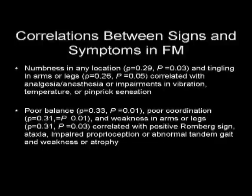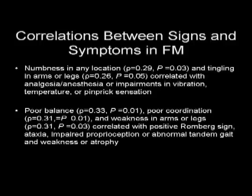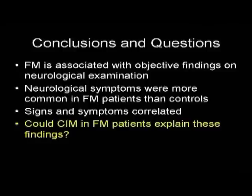We were interested in how well the symptoms and objective findings correlated. The answer was yes. The complaint of numbness in any location and tingling in the arms or legs correlated with anesthesia, analgesia, or impairments in vibratory, temperature, or pinprick sensation. Poor balance, poor coordination, and weakness in the arms and legs correlated positively with Romberg sign, ataxia, impaired proprioception, or abnormal tandem gait and weakness. So we found that FM is associated with objective findings on neurological examination, and symptoms were more common in FM patients than controls, and in many cases the signs and symptoms did correlate.